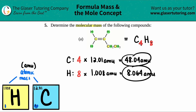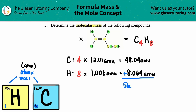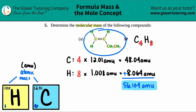Now to find the molecular mass of the total compound, we add them up. So 8.064 plus 48.04 gives a total molecular mass of 56.104 amu — and that is your final answer. So collectively, 56.104 amu is the molecular mass of butene, or C4H8.